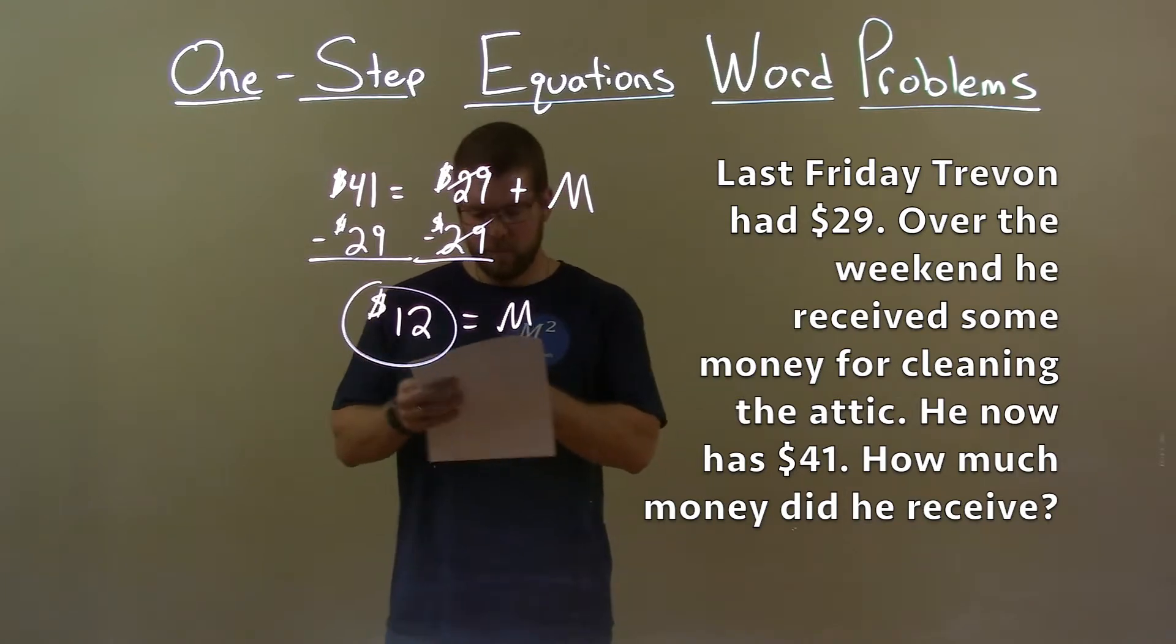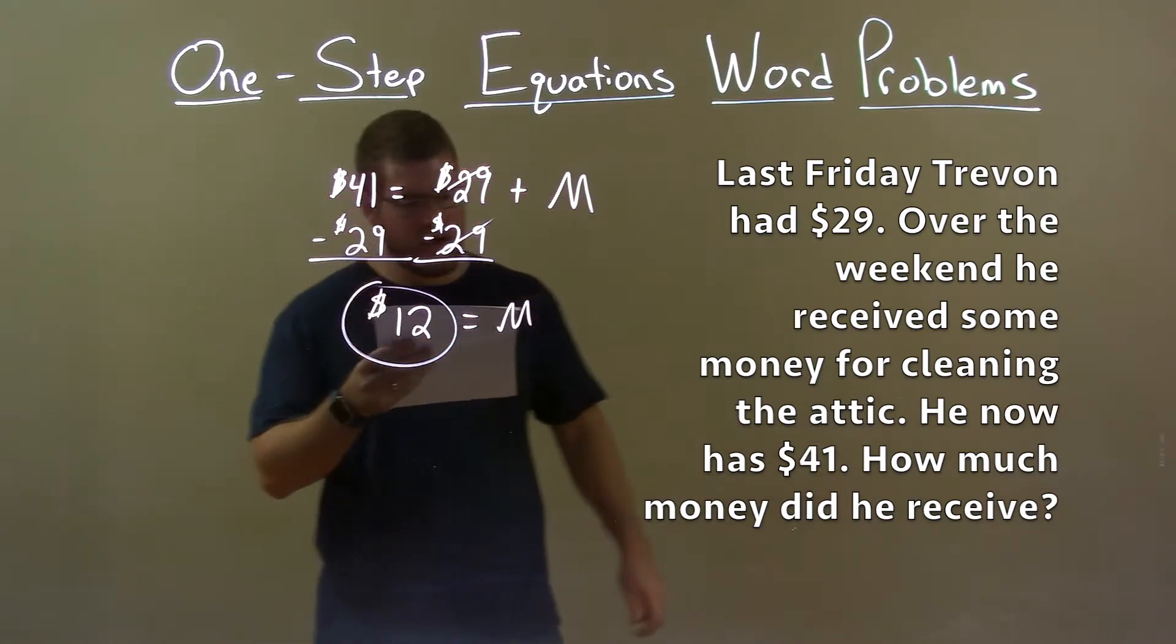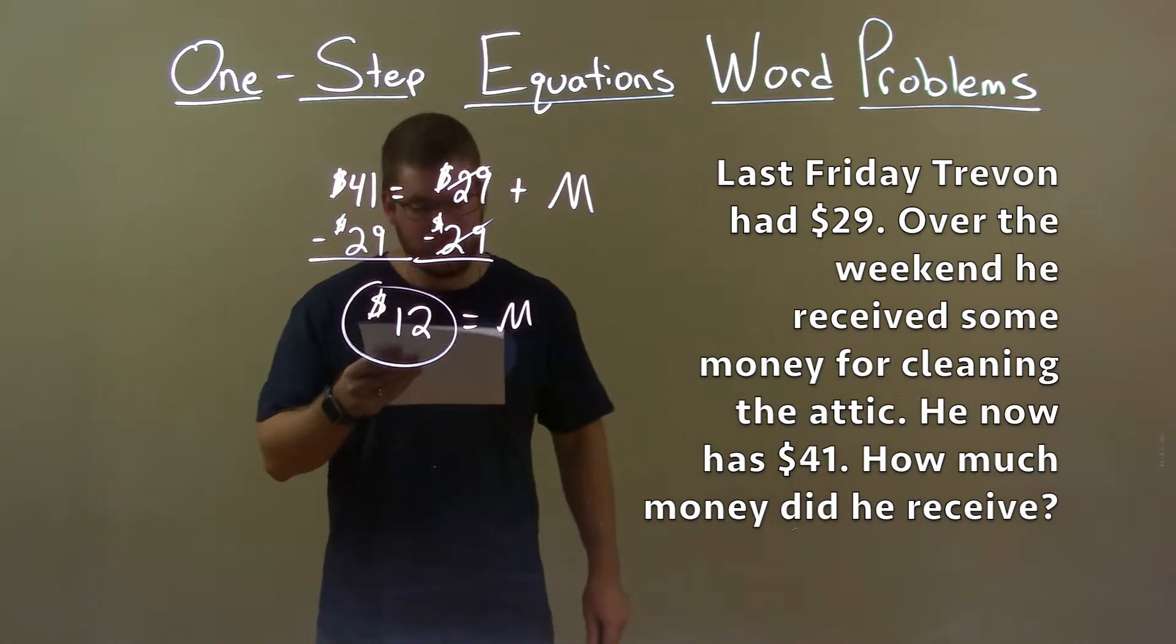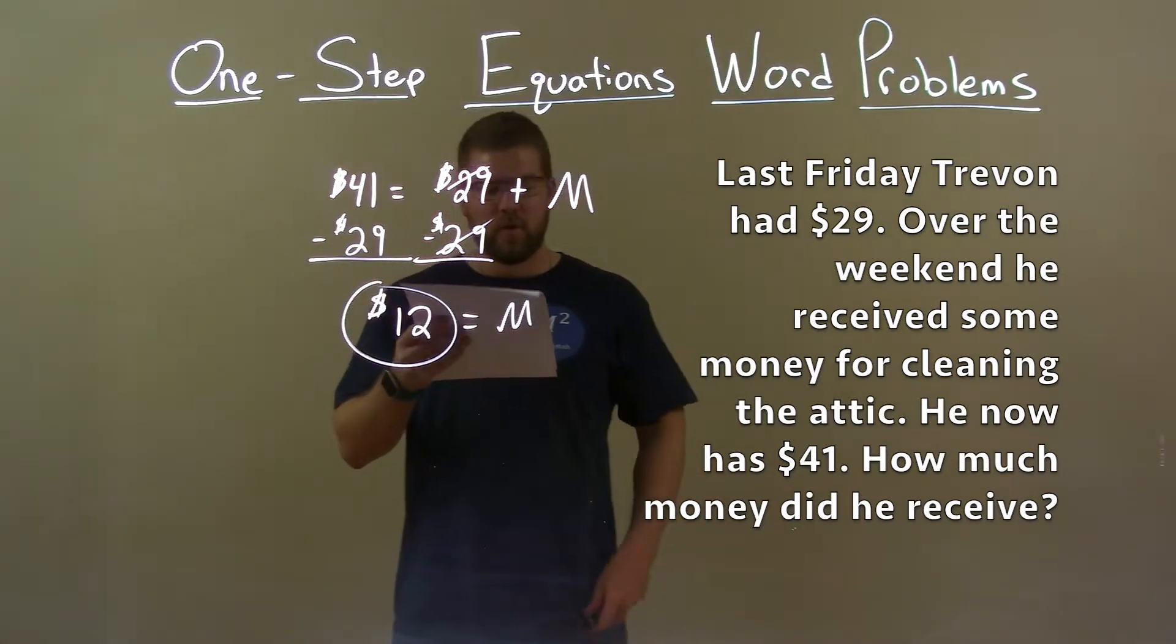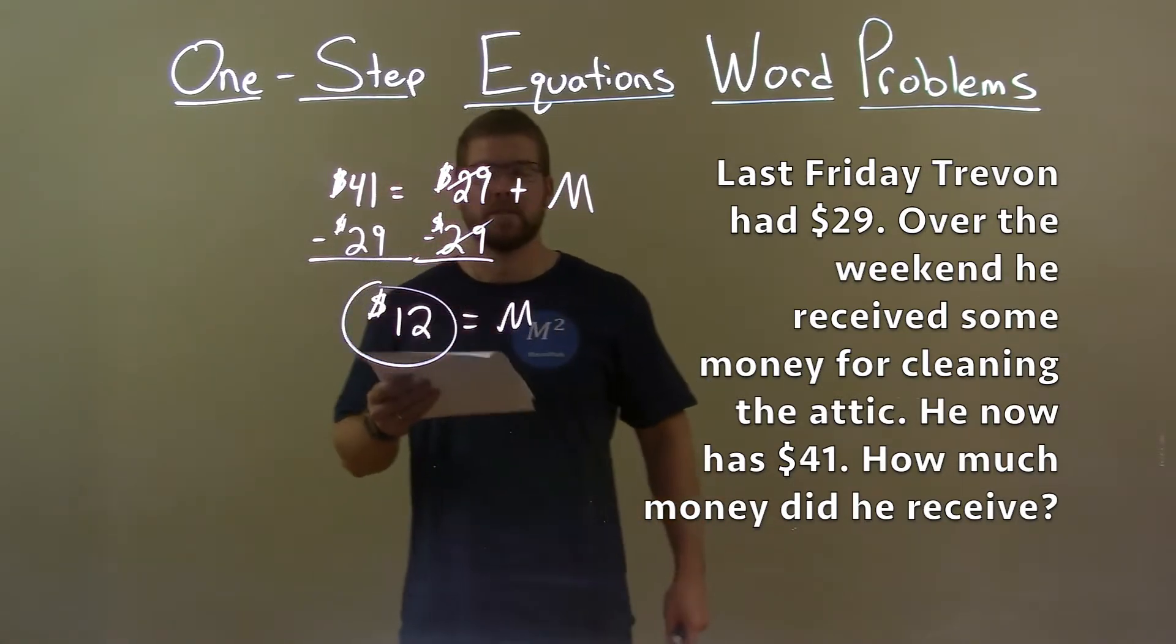Quick recap. We're given the word problem: Last Friday, Trayvon had $29. Over the weekend, he received some money for cleaning the attic. He now has $41. How much money did he receive?